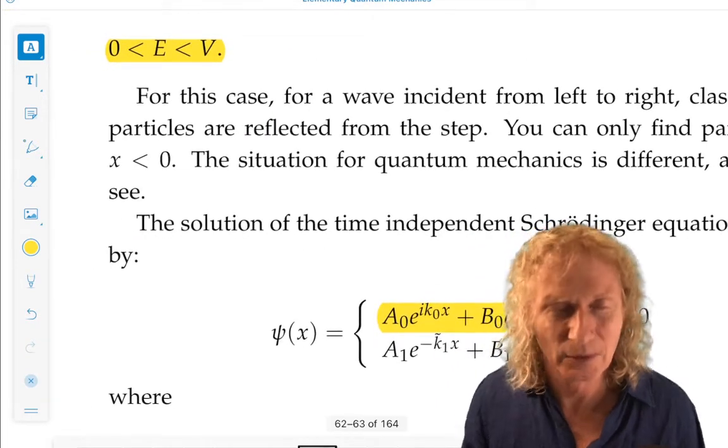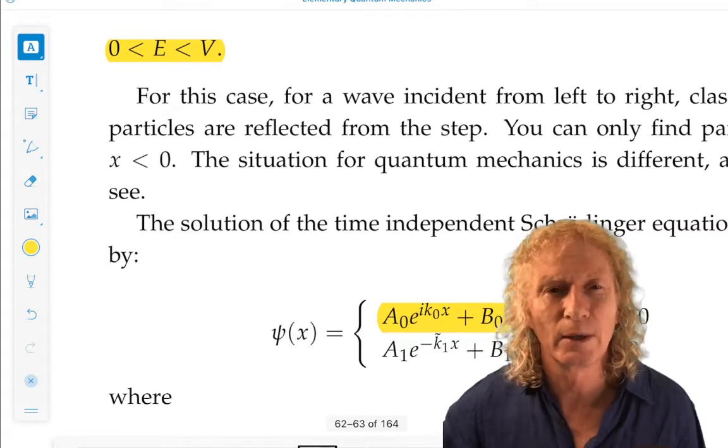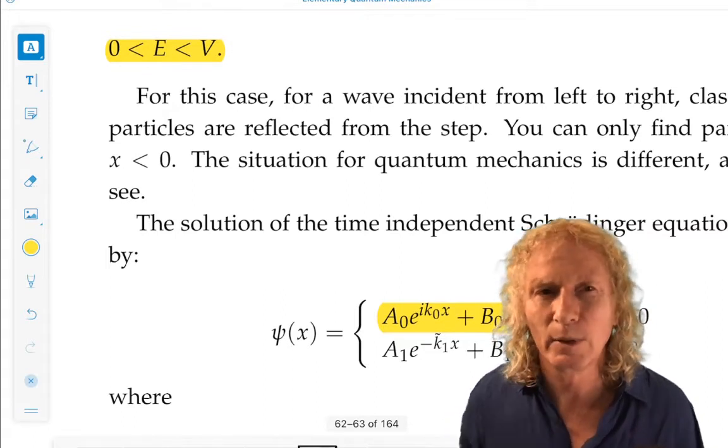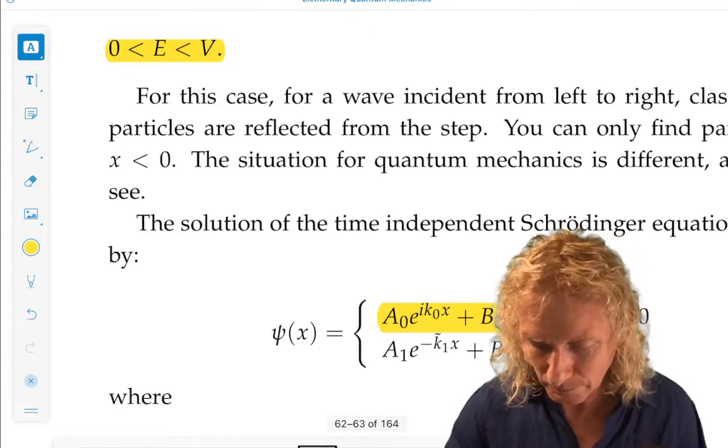Certainly for x less than zero, everything's fine. The problem we run into is for x greater than zero. And that's when we have... The situation is classically forbidden.